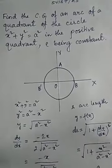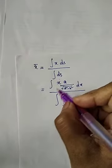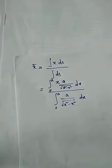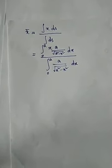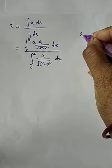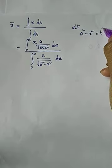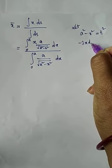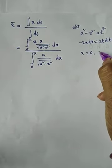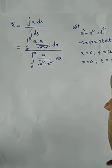The limit for x is 0 to a. To evaluate the numerator integration, we substitute a² − x² = t², so −2x dx = 2t dt. When x = 0, t = a; and when x = a, t = 0.